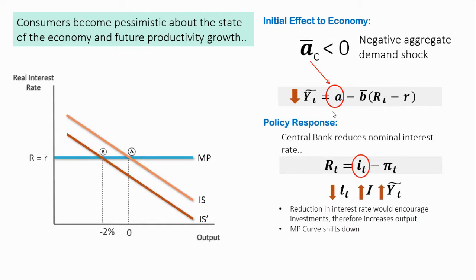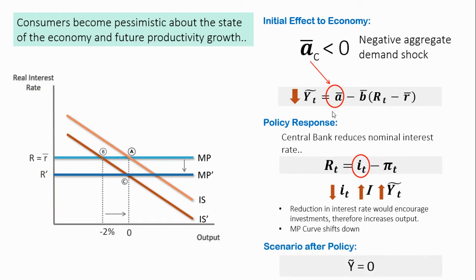In order to stabilize the economy, the central bank would target a reduction in the interest rate by increasing money supply. Since inflation is sticky in the short run — meaning it does not respond too quickly in the same time period — changes in nominal interest rate will be reflected in the real interest rate. With this policy, the MP curve shifts down, the lower interest rate encourages investment, and the economy is stimulated, closing the gap between actual and potential output.